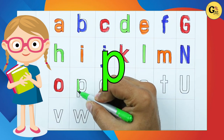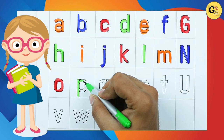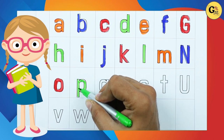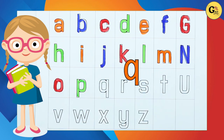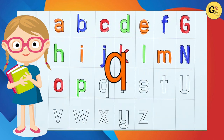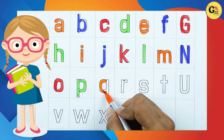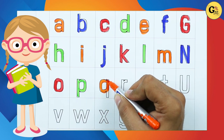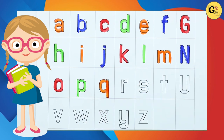P. P with green color. P for Parrot. Q. Q for Queen. Q with orange color. It's small Q. Q for Queen.